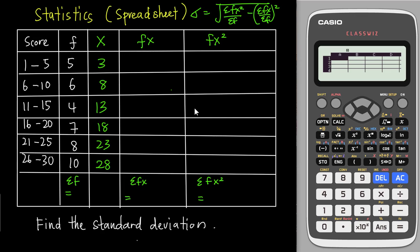Right now I need to key the data into my calculator. I need to tell the calculator what A and B represent. To avoid confusion, I'll make A my frequency (f) and B my mid-interval (x). So A multiplied by B becomes fx, and A multiplied by B² becomes fx², meaning f multiplied by x².